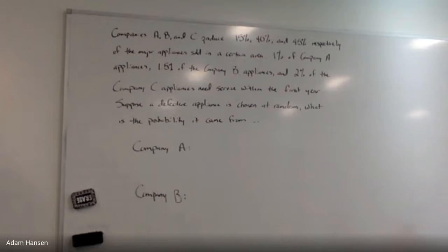Okay, here's the situation. I want to outline this with a tree diagram. There are three companies, A, B, and C. Respectively, they produce 15%, 40%, and 45% of the major appliances sold in a certain area. I'm also given the defectiveness rates: 1% of Company A appliances, 1.5% of B, and 2% of Company C appliances need servicing within the first year of installation.